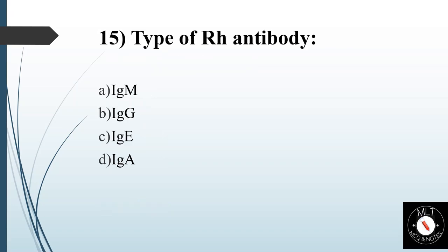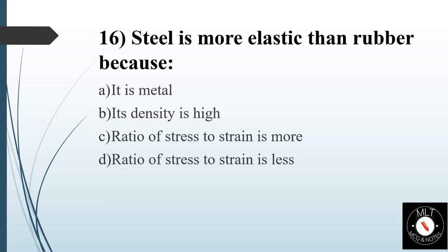Fifteenth question. Type of Rh antibody. Option A: IgM. Option B: IgG. Option C: IgE. Option D: IgA. Answer is Option B: IgG.